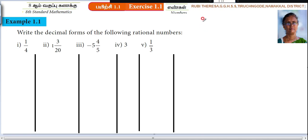So, to make it into decimal, what is the easy way? The denominator, it should have 10, 100, 1000, 10,000, like that. Isn't it? Depends on the number of zeros, you will keep the point.